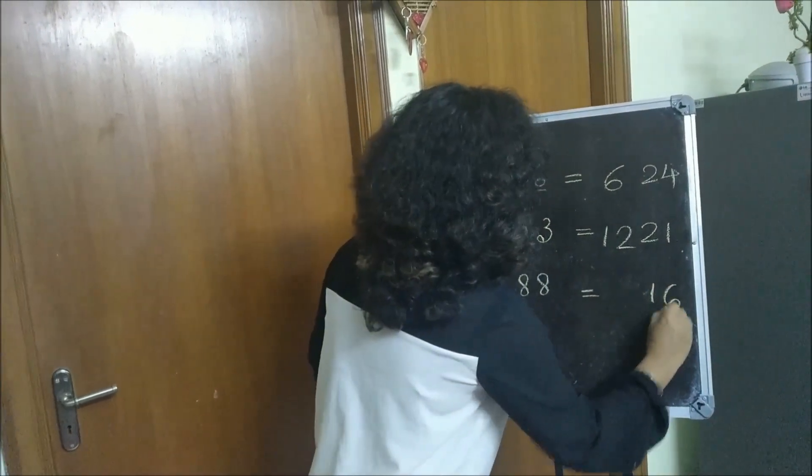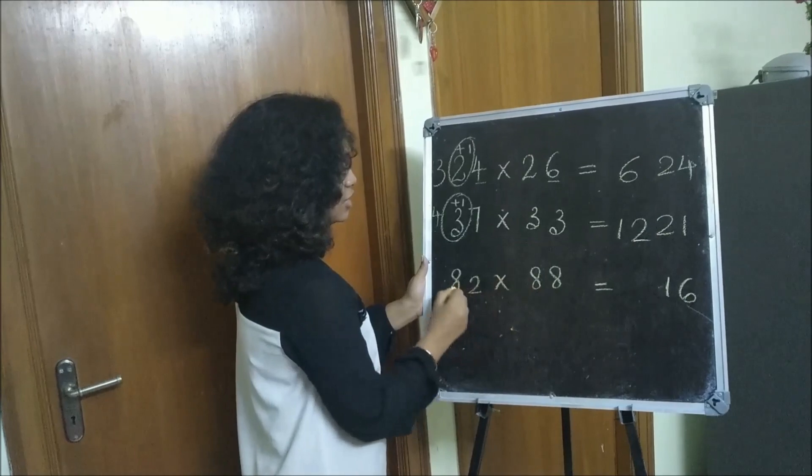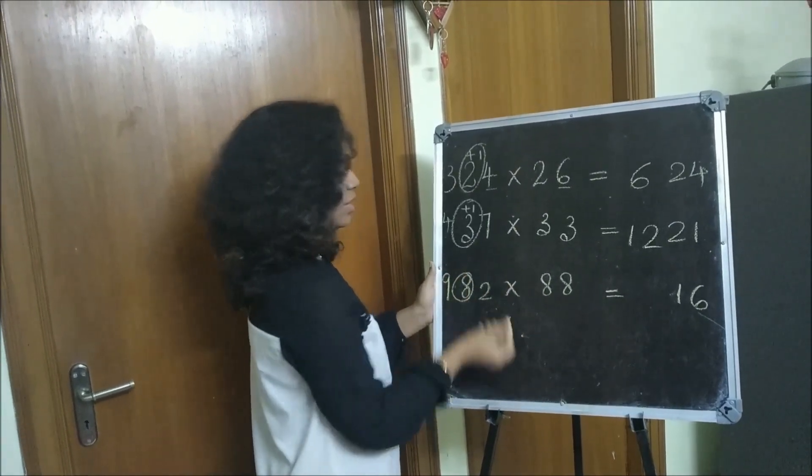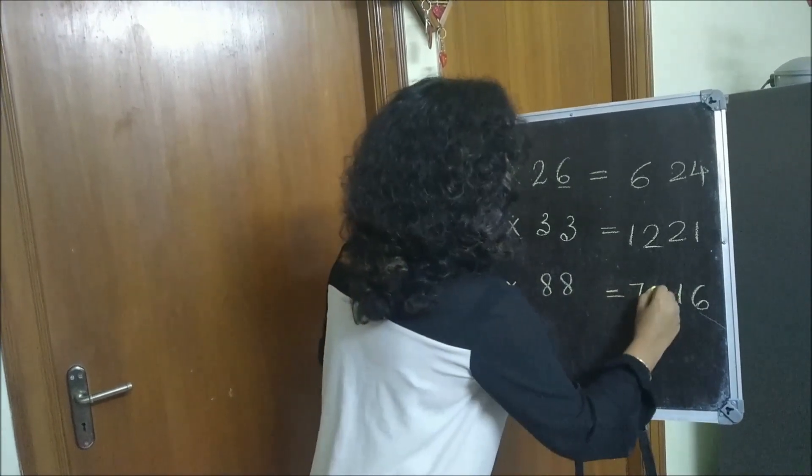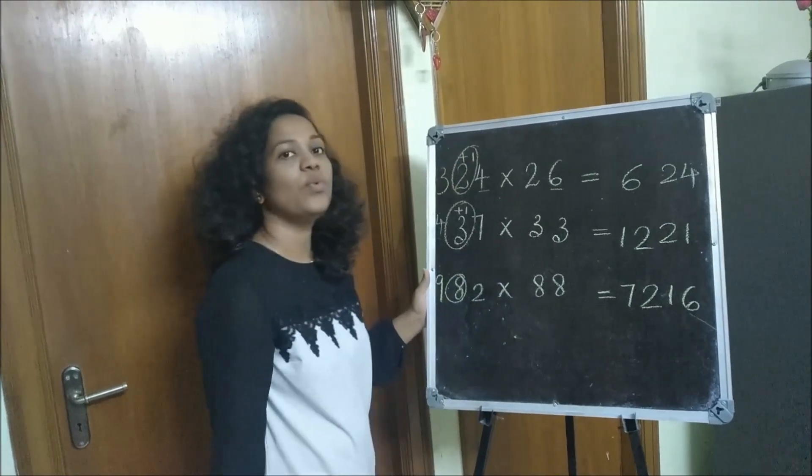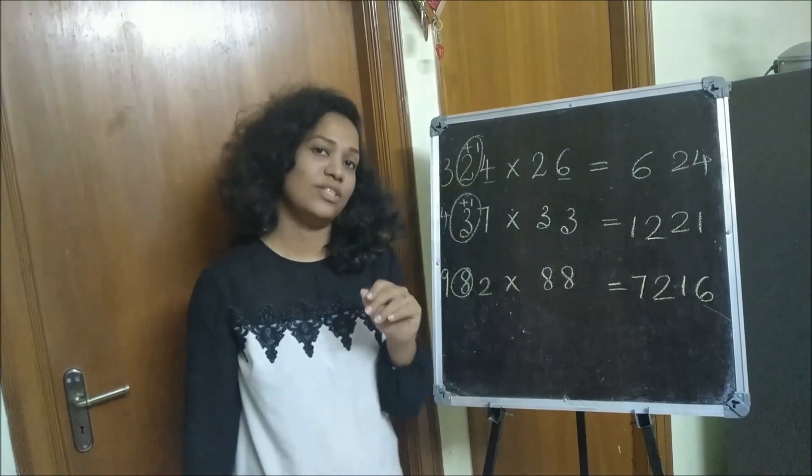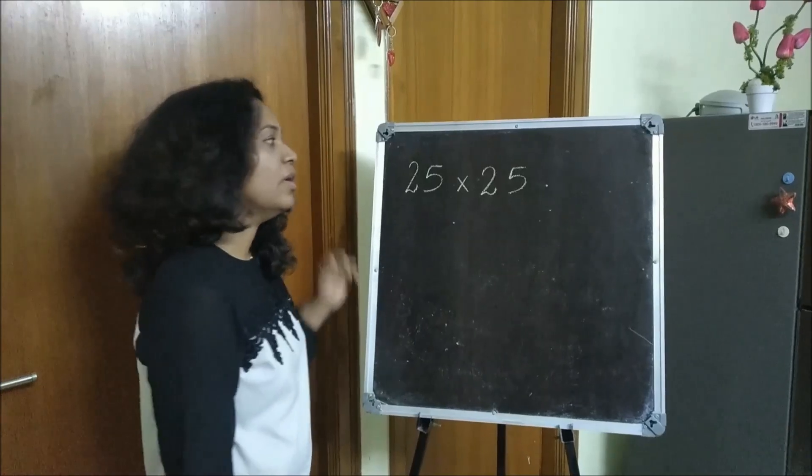2 eights are 16 and 8 into 9, 72. 7216 is your answer. Okay.